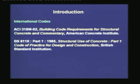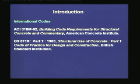From time to time we may refer to some international codes. The first is ACI 318 M02, the building code requirements for structural concrete and commentary, published by the American Concrete Institute, covering both structural concrete and pre-stressed concrete. The second is BS 8110, Part 1, 1985, titled Structural Use of Concrete, Part 1, Code of Practice for Design and Construction, published by the British Standard Institution.